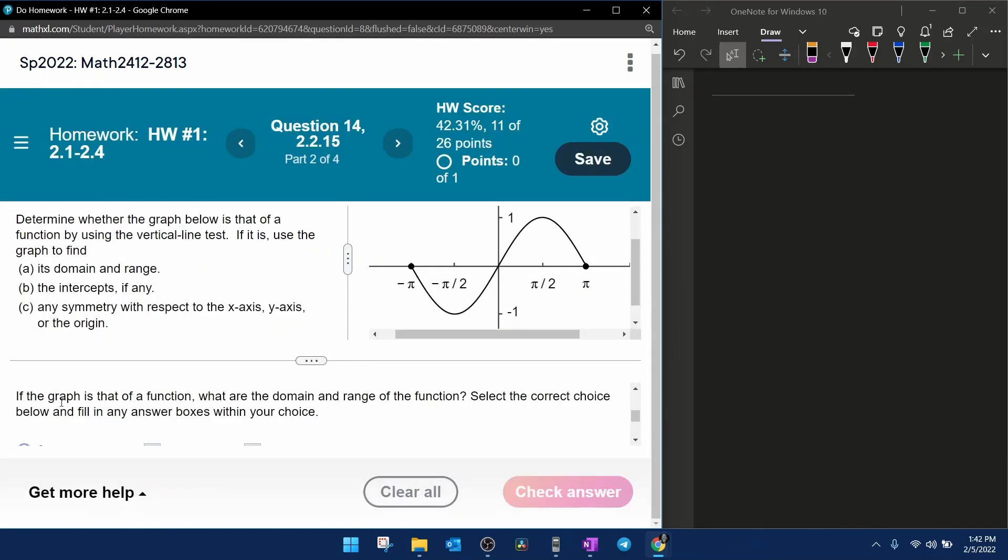Next part, it says if the graph is that of a function, what are the domain and range of the function? Select the correct answer choice below and fill in any answer boxes with your choice. So this was a function, so we know that there is going to be a domain and a range, the domain are the values that x can be,